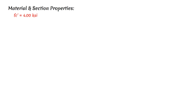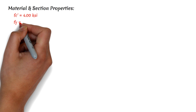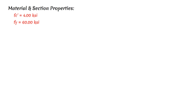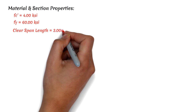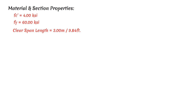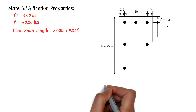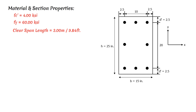We will be using these material and section properties. FC prime, the concrete strength, equals 4.0 kilopound per square inch. F sub y, the rebar yield strength, equals 60.0 kilopound per square inch. The clear span length of our column is 3 meters or 9.84 feet. The distance from the outer fiber to the center of the longitudinal bars, D prime, equals 2.5 inches. We assume a column dimension of 15 by 25 inches with 8 pieces of number 9 rebars.